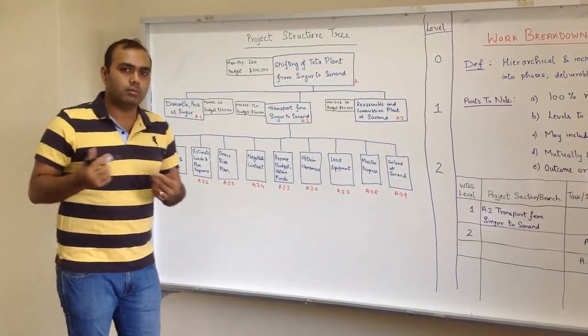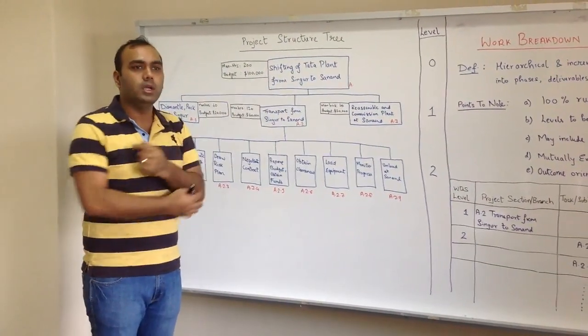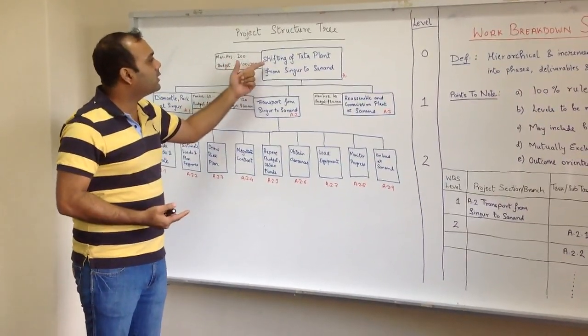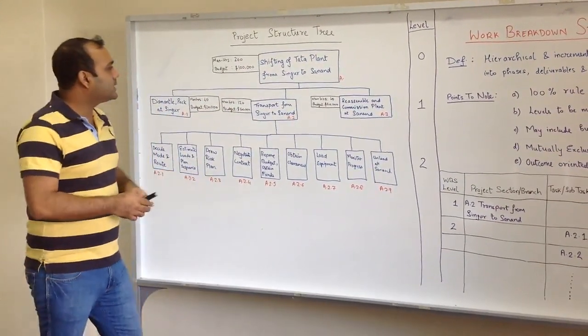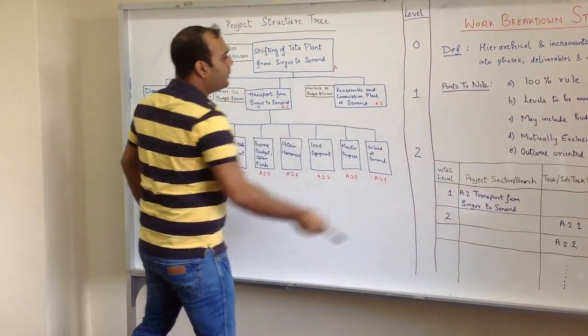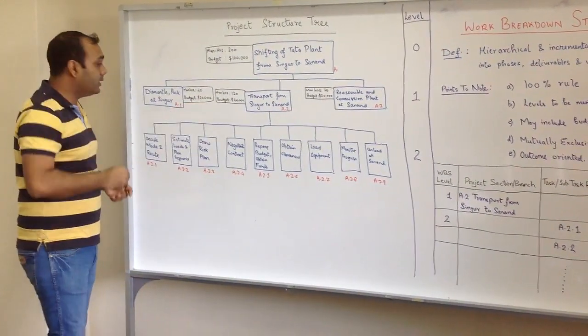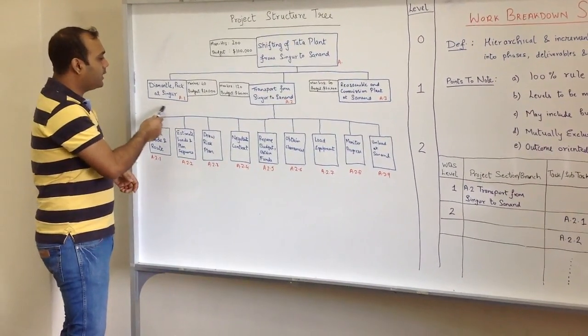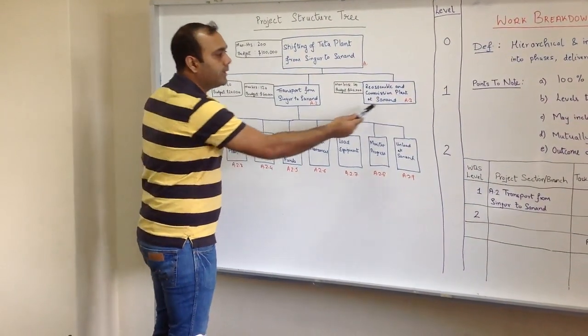Let's say the main deliverable of the project is shifting of a Tata plant from Singur to Sanand. You can see this is level zero, and I've broken it down into three outcomes: dismantle and pack at Singur, transport from Singur to Sanand, and reassemble and commission at Sanand.